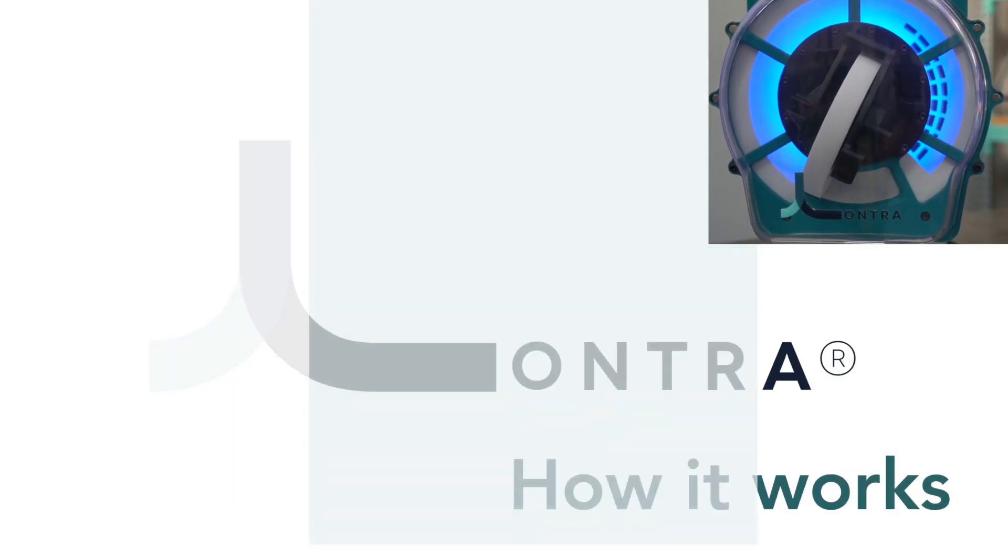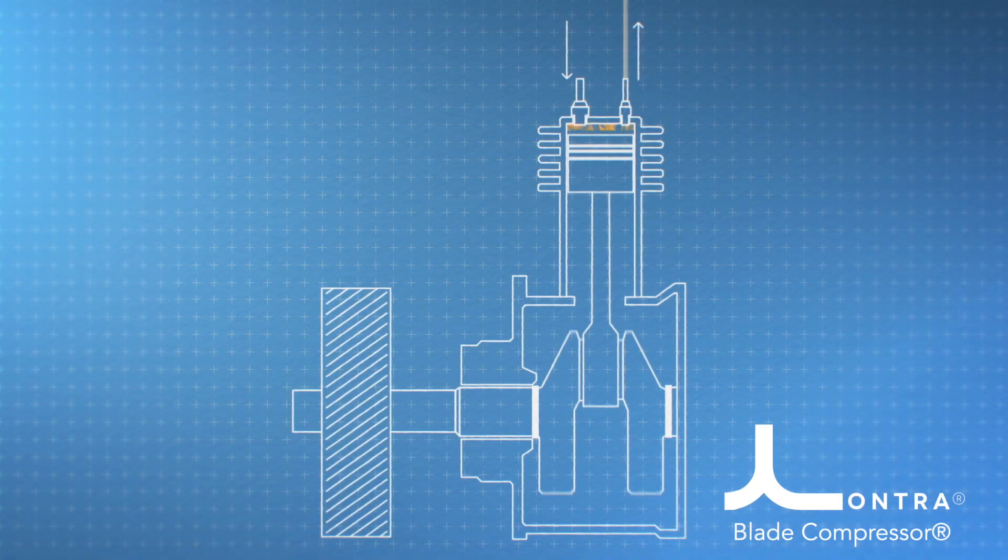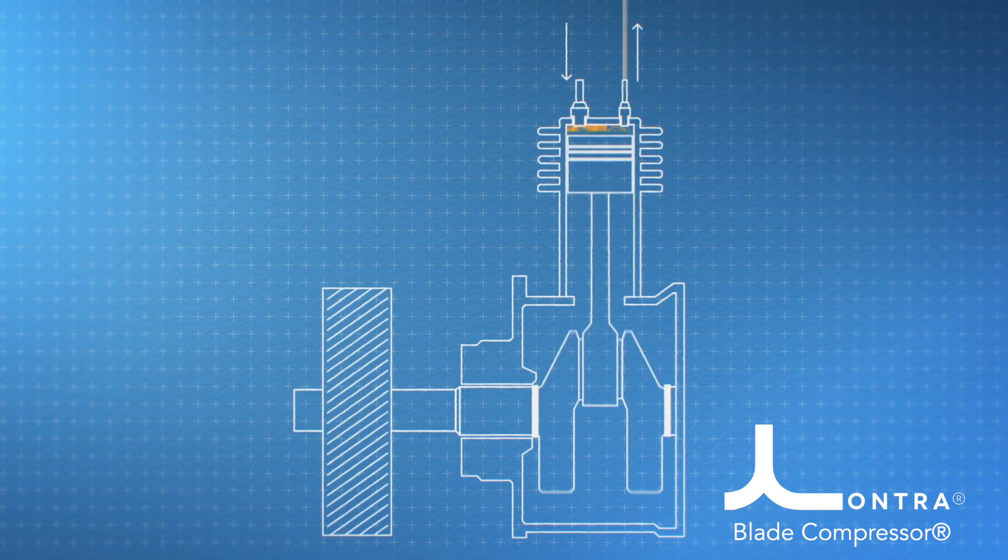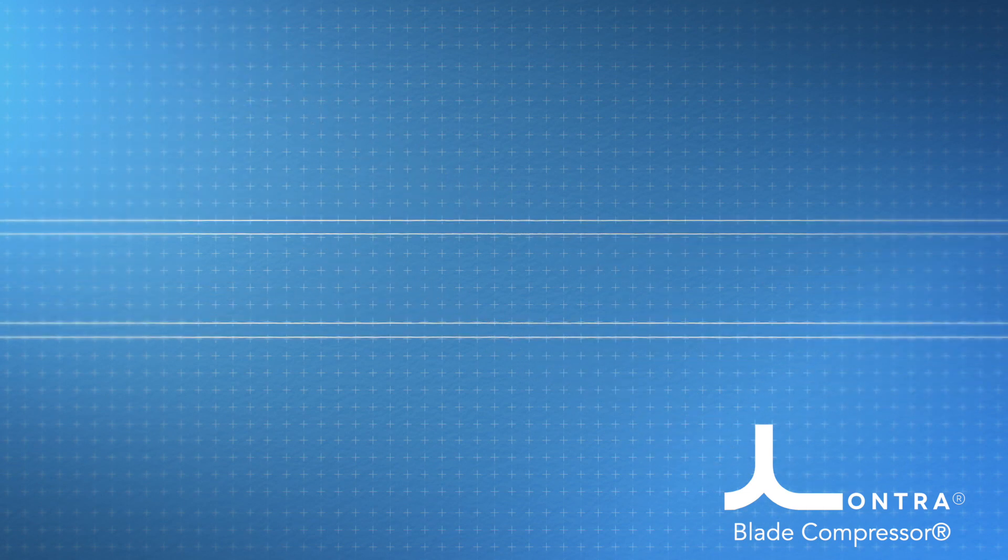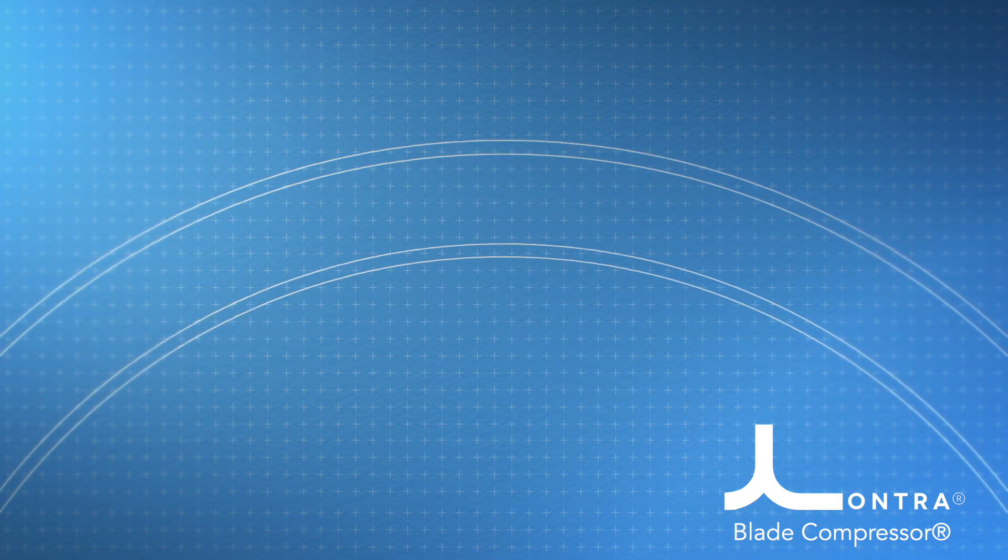The Lontra blade compressor and how it works. Take the piston and the cylinder used in everything from the compressor in your fridge to the engine in your car and wrap the cylinder into a donut shape.